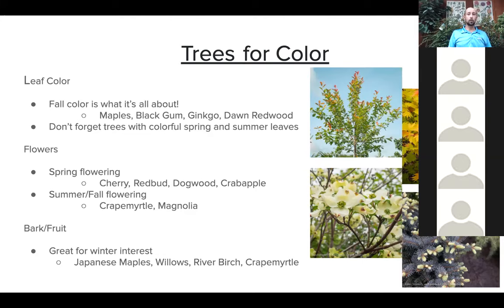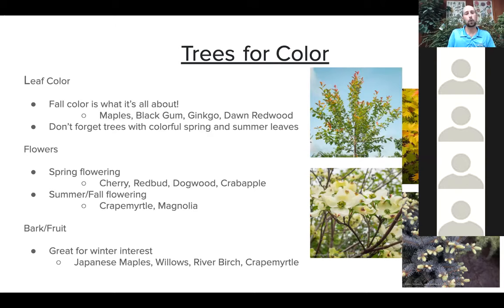Don't forget trees with colorful spring and summer leaves. Black gum is one of them, and there are purple leaf and yellow leaf redbud varieties that keep color going through the year. For flowers, everyone thinks of spring — cherries, redbuds, dogwoods, crab apples all bloom in spring. Crab apples will also provide fruit in winter to look at. Magnolia can also bloom in spring. For summer and fall flowering, crape myrtles are one of the few blooming late summer into fall; evergreen magnolias sometimes continue blooming into fall.